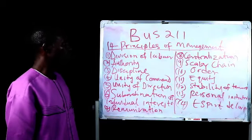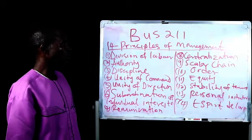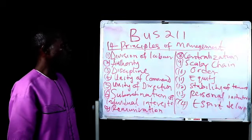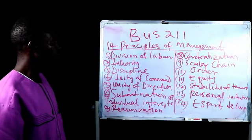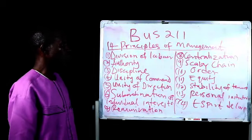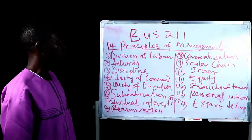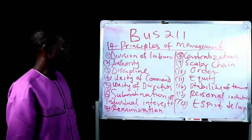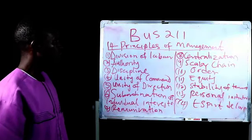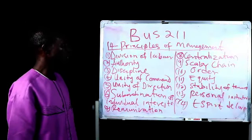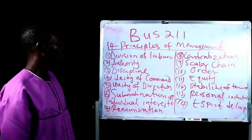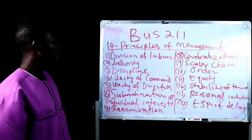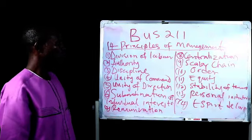One of the principles he developed is the principle of division of labor. The division of labor is meant to ensure that all activities in the organization are divided into different sections, so that all the functions will not be performed by a single individual, in order to guard against monotony. For example, in most organizations we have the production unit, the financial unit, the security section, the management section, and the administration — all working towards attaining the overall goals of the organization.